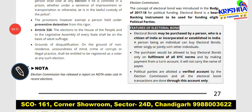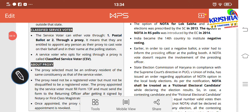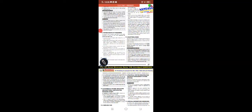So to summarize: NOTA stands for None Of The Above. When you don't wish to vote for any party, you can choose NOTA. India is the 14th country to institute a negative vote. The State Election Commissioner of Haryana, in compliance with directives issued by the Supreme Court in PUCL v. Union of India, designated NOTA as a fictional electoral candidate.